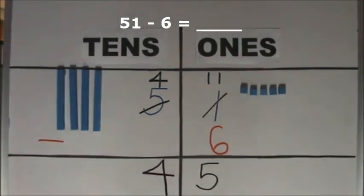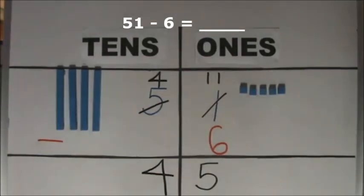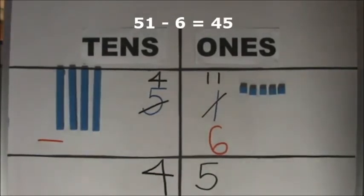When we subtract 6 from 51, we get 45. 51 minus 6 equals 45.